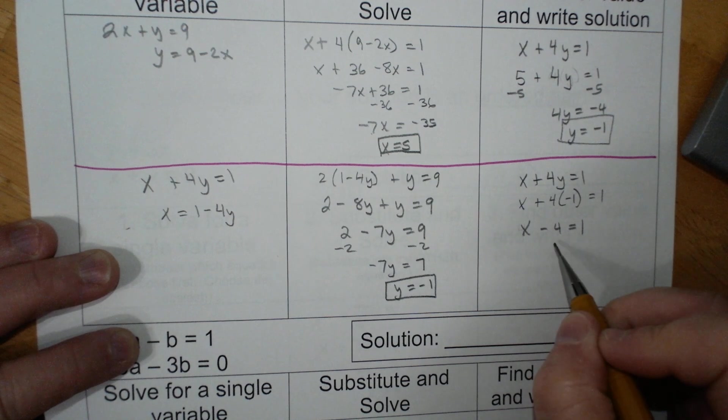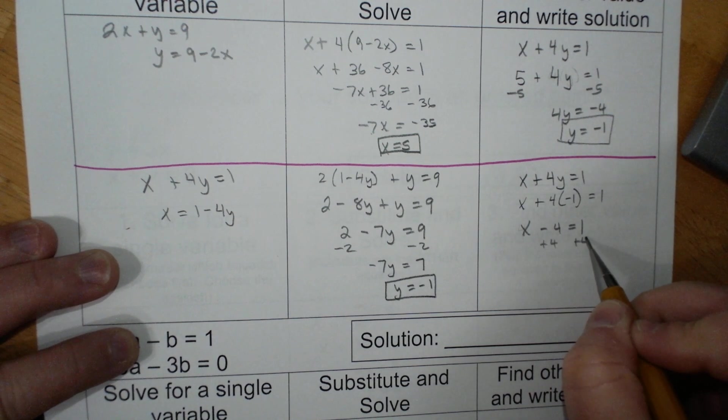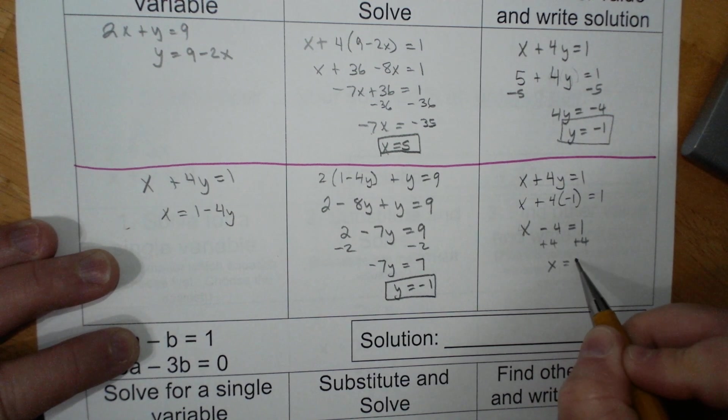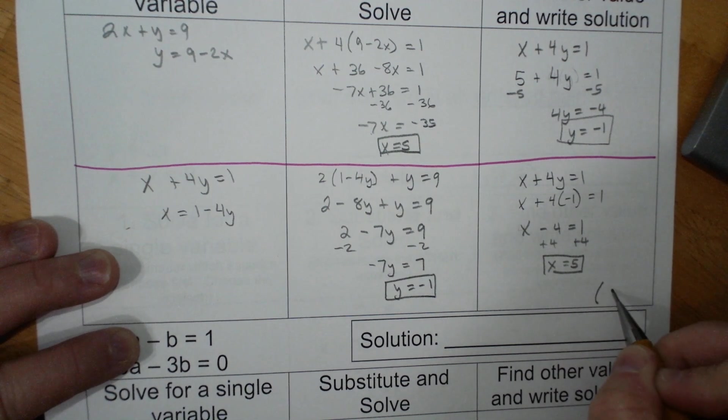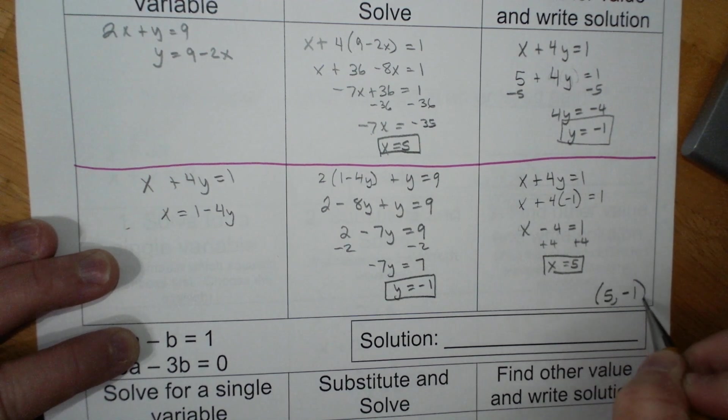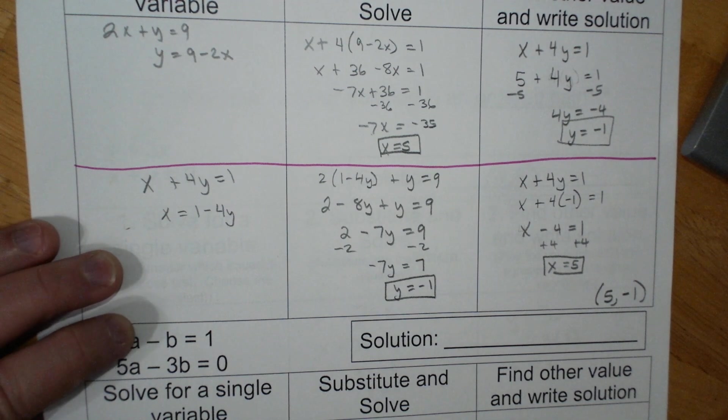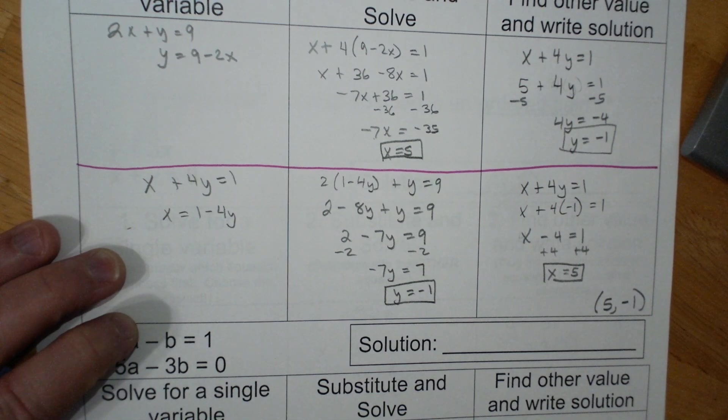My answer is 5, negative 1. So as long as you do all the math and manipulation, you can go different paths as long as they're legal paths.